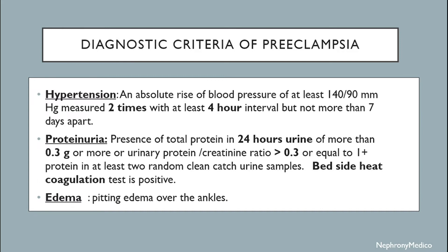Diagnostic criteria of preeclampsia: Hypertension — an absolute rise of blood pressure of at least 140 over 90 mmHg, measured two times with at least a four-hour interval but not more than seven days apart. Proteinuria — presence of total protein in 24-hour urine of more than 0.3 grams, or urinary protein over creatinine ratio more than 0.3, or 1+ protein in at least two random clean-catch urine samples. Bedside heat coagulation test is positive. Edema — pitting edema over the ankles.